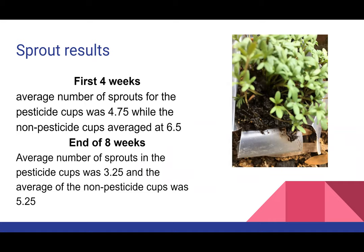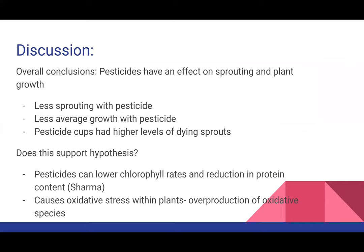Looking more specifically at the sprout results: in the first four weeks, the average number of sprouts in the pesticide cups was 4.5, while the average number of sprouts in the non-pesticide cups was 6.5. At the end of the eight weeks, the average number of sprouts in the pesticide cups was 3.25, and the average in the non-pesticide cups was 5.25.